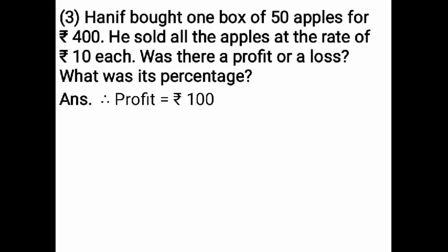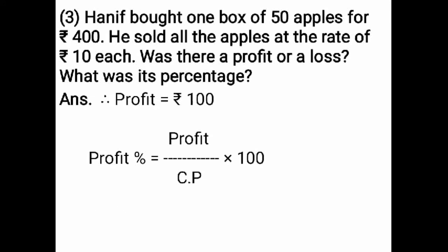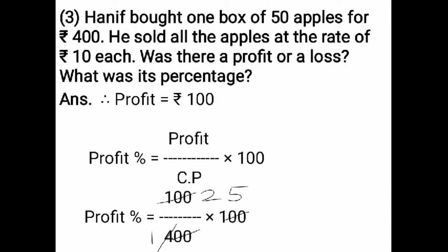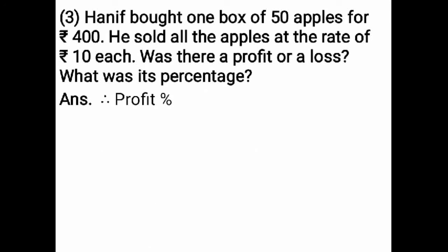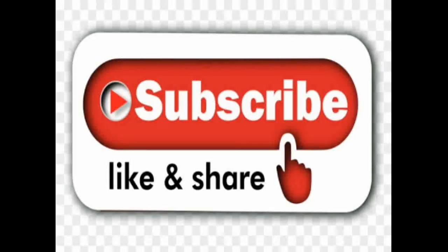The formula for profit percent is profit upon cost price multiplied by 100. Profit is 100, upon cost price of 50 apples which is 400, multiplied by 100. Cancel both zeros. Divide 100 by 4, which equals 25%. Therefore, profit percent is 25%. If you understood Class 6th Maths Practice Set 33, please use the feedback or comments, subscribe to the channel, like and share. Thank you.